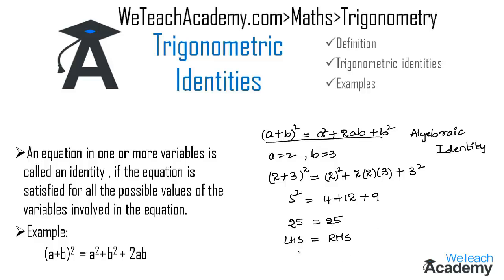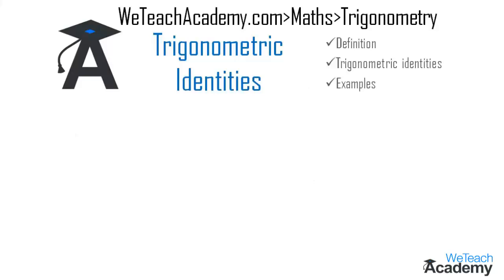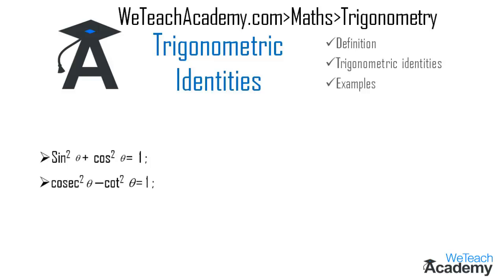Now let us establish some basic trigonometric identities. The first and most fundamental one is sin²θ + cos²θ = 1. The second identity is cosecant²θ − cot²θ = 1. The third identity is secant²θ − tan²θ = 1. Let us consider the first identity and prove whether it is true for all values of θ.